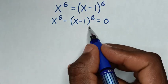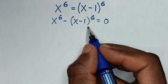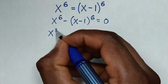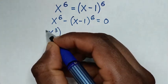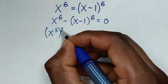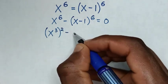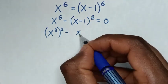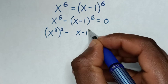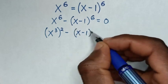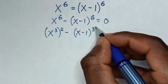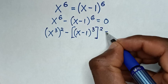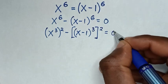Then we rewrite this in the form of a difference of squares. So x to the power of 6 is the same as (x³)², and (x minus 1) to the power of 6 is the same as ((x minus 1)³)², equal to 0.